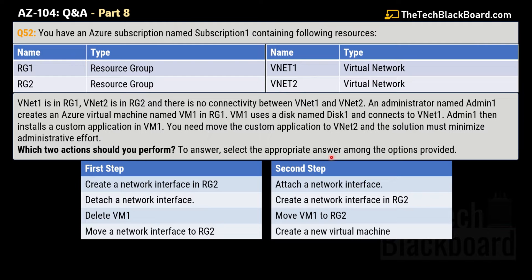There are two steps to answer. For Step 1, the options are: create a network interface in RG2; detach a network interface; delete VM1; or move the network interface card to RG2. You must select the most appropriate option from these four.